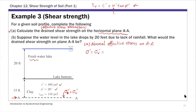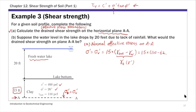We have a freshwater lake, which doesn't contribute to effective stress, so we only need to focus on the 15 feet of saturated clay. Using the buoyant unit weight gamma prime, that's 15 times (110 minus 62.4), which gives sigma prime = 714 PSF — the normal effective stress on plane AA.